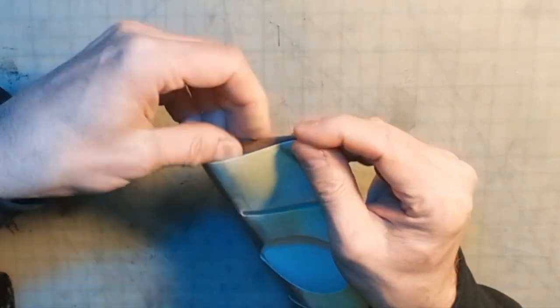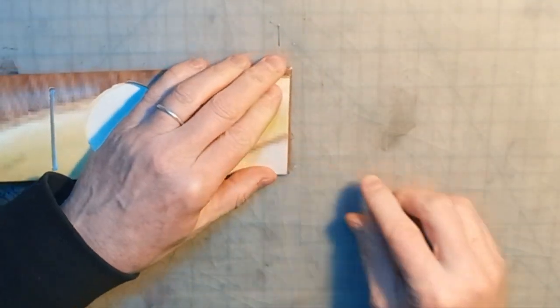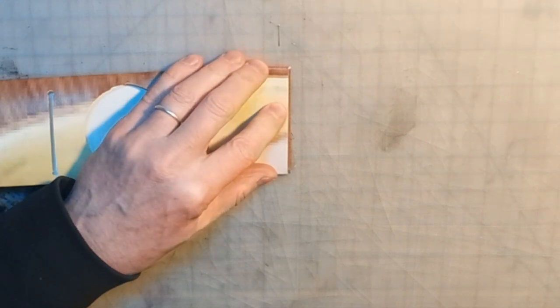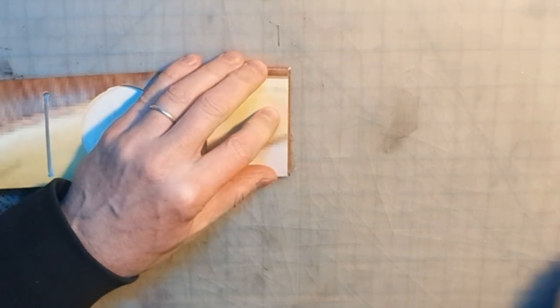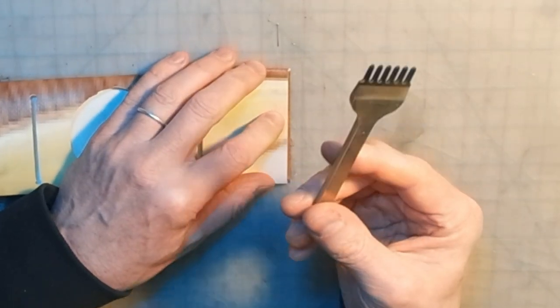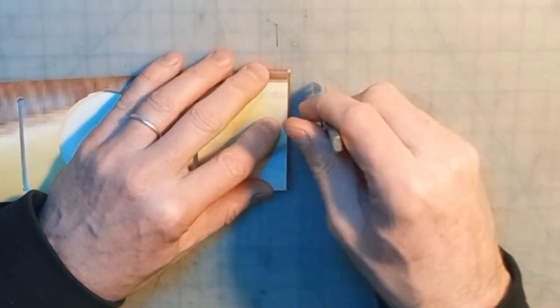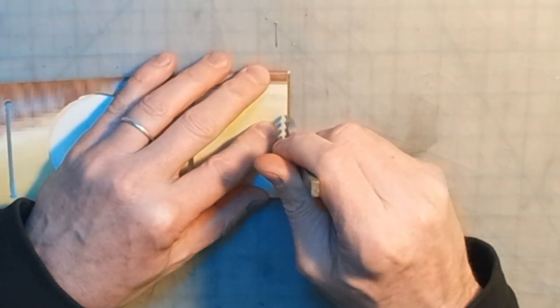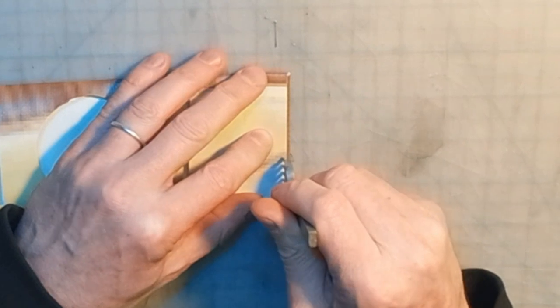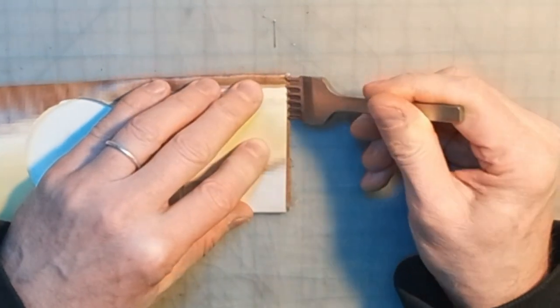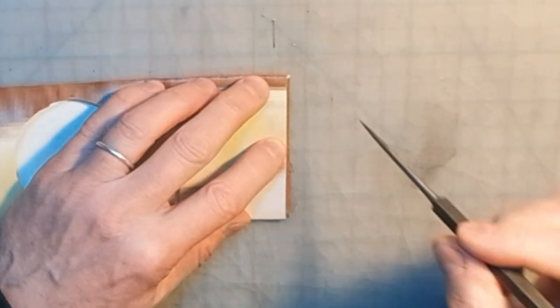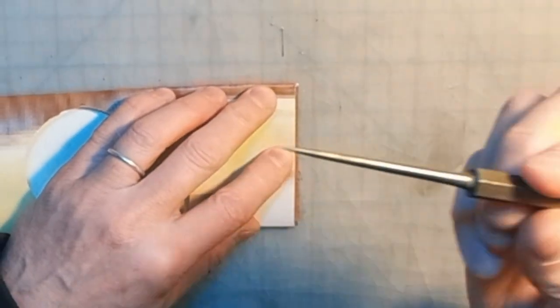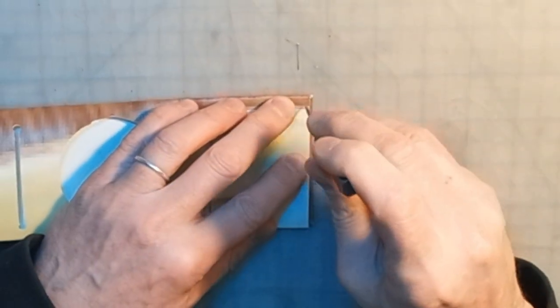But if you don't have a sewing machine at your disposal, what you can do is, again, here's a specialized tool. This is for working with leather and it makes even holes along something. You hammer it in. Or you can just use an awl and poke holes. So that's what I've done.